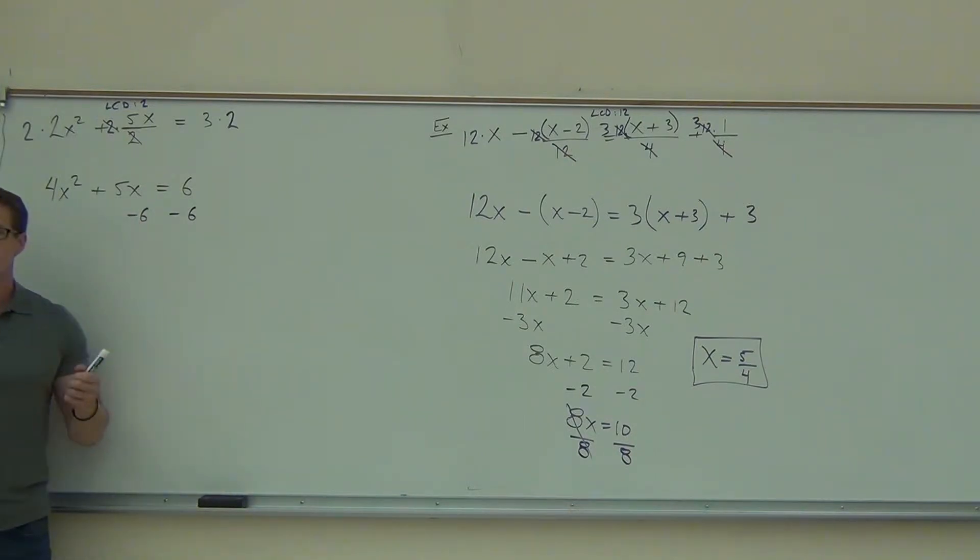Now here's a question for you. Could you have moved the 3 first? Sure, and the same thing would work out. Notice if you move the 3 first, you have minus 3 there, right? If you multiplied everything by 2, you'd still have the minus 6 that we're about to get. So it works out either way.